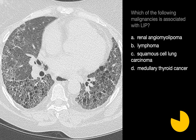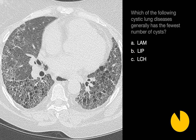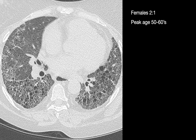Which of the following malignancies is associated with LIP? There is an association between LIP and lymphoma. Which of the following cystic lung diseases generally has the fewest number of cysts? While the number of cysts can certainly be few to many in cases of LAM or LCH, in cases of LIP the number of cysts is generally fewer than the other two disorders. LIP tends to occur a little more often in women, and its peak age of presentation is usually in the 50s to 60s.